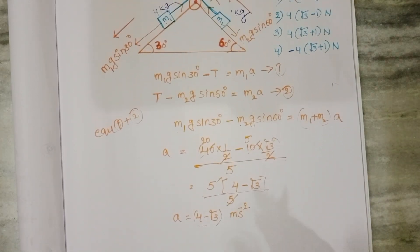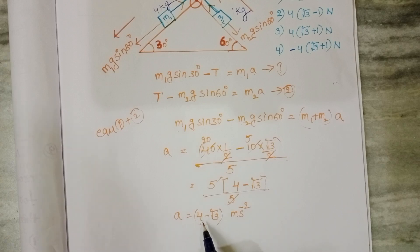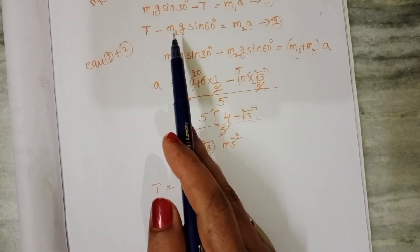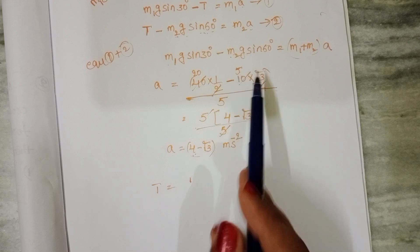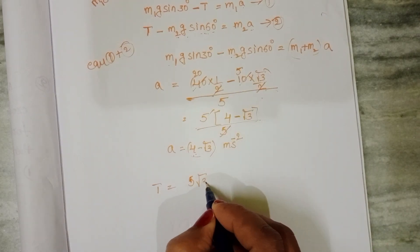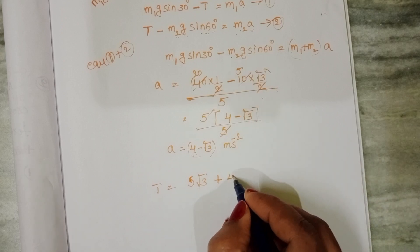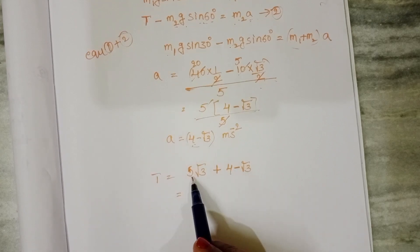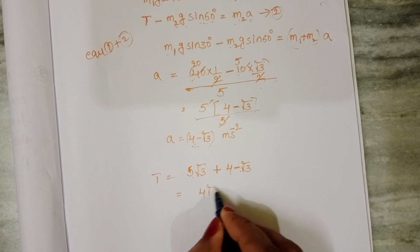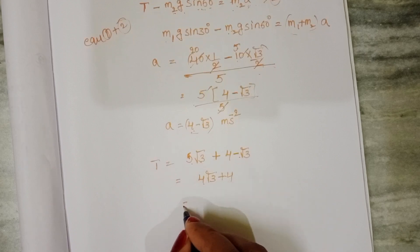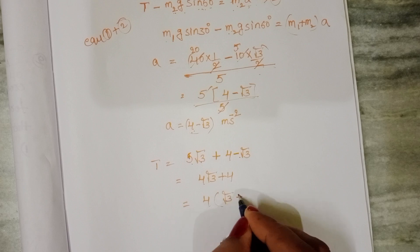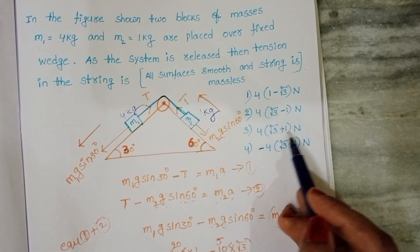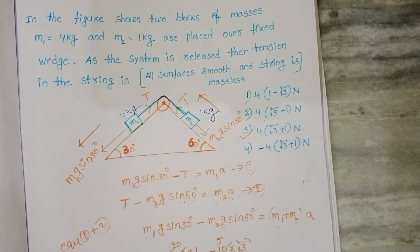Now we find the tensional force by substituting acceleration into equation 2. T equals M2·G·sin 60° plus M2·A, which gives 5√3 plus (4 minus √3) times 1. This simplifies to 5√3 minus √3 plus 4, which equals 4√3 plus 4. Taking 4 common: T equals 4(√3 plus 1) Newton. So the tension in the string is 4(√3 + 1) Newton.